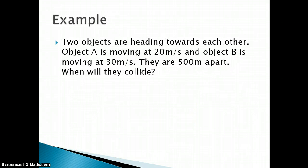You have two objects heading towards each other. One's going at 20 meters per second, the other is going at 30. They're 500 meters apart. When are they going to collide? You could gradually get to a conclusion that they're going to collide closer to object A and then do a little bit of math and figure that out.